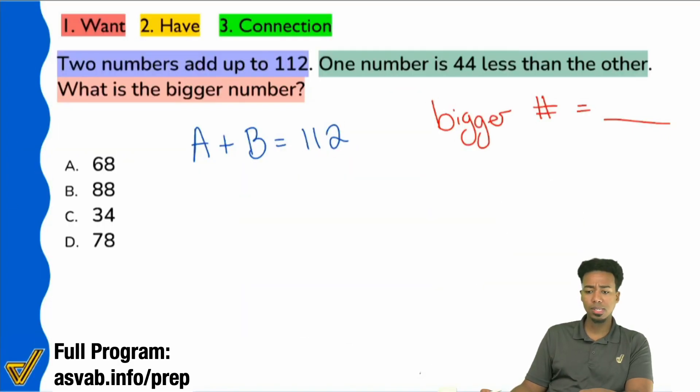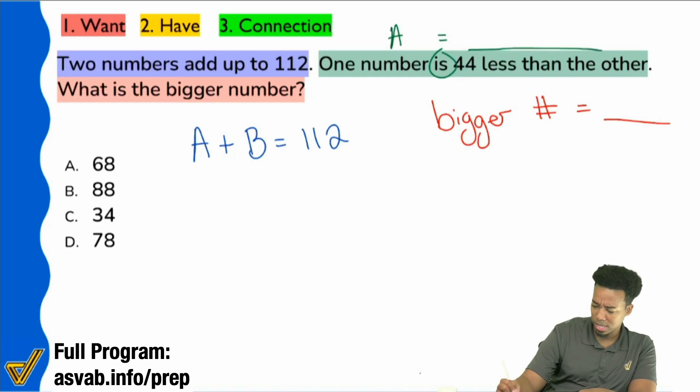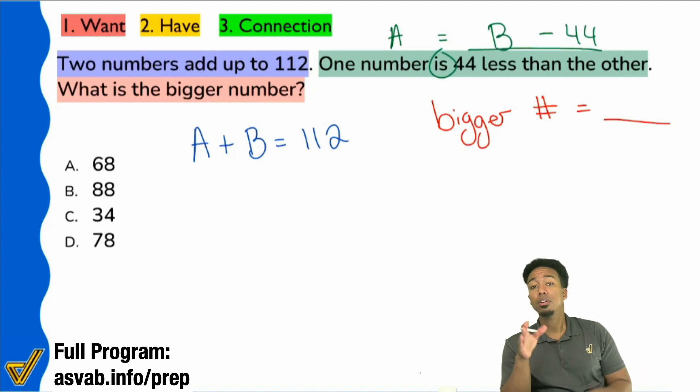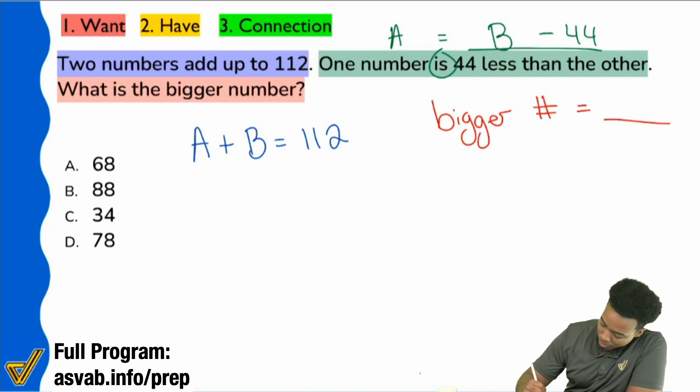So everybody, is that saying that we could say, okay, one number, so A equals 44 less than, so minus 44 than the other. B minus 44. We have to know how to read that English. 44 less than another number means this number minus 44. It seems a little backwards, but that's the truth behind it. So A equals B minus 44.